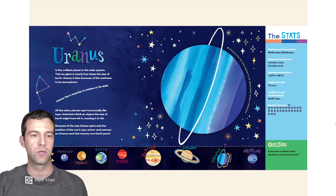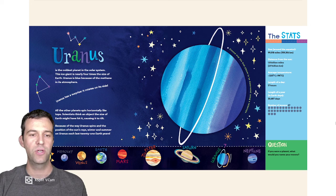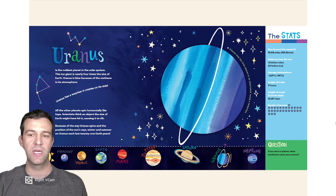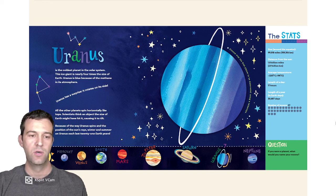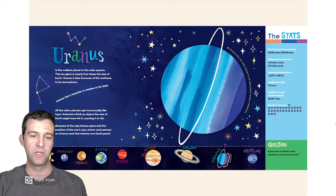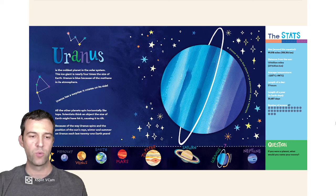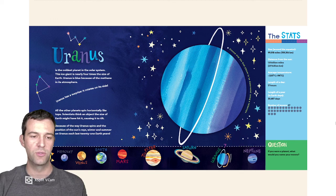Uranus is the coldest planet in the solar system. This ice giant is nearly four times the size of Earth. Uranus is blue because of the methane in its atmosphere. Uranus has a surprise. It rotates on its side. All the other planets spin horizontally like tops. Scientists think that an object the size of Earth might have hit it, causing it to tilt. Because of the way Uranus spins and the position of the sun's rays, winter and summer on Uranus each lasts 21 Earth years.